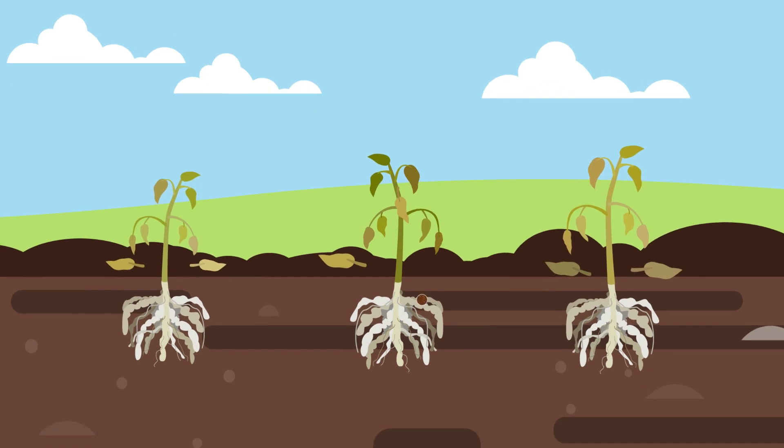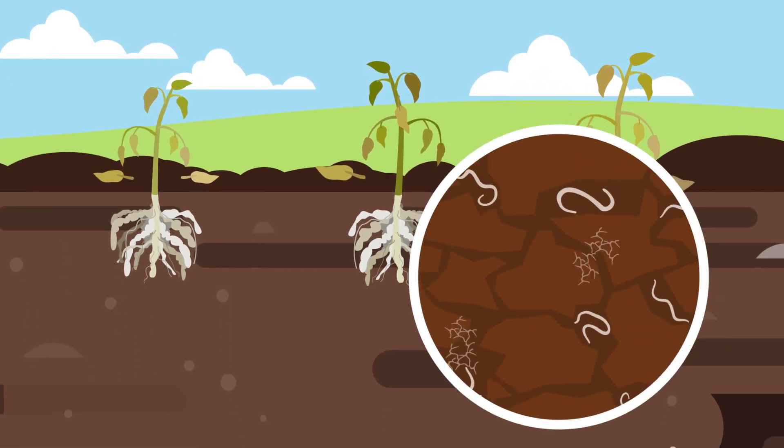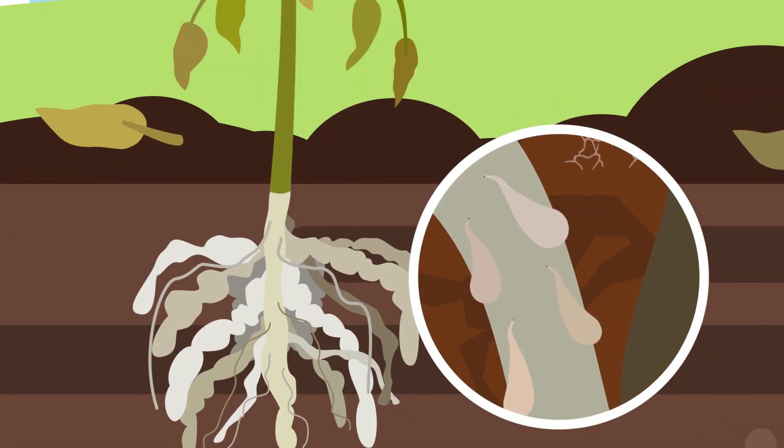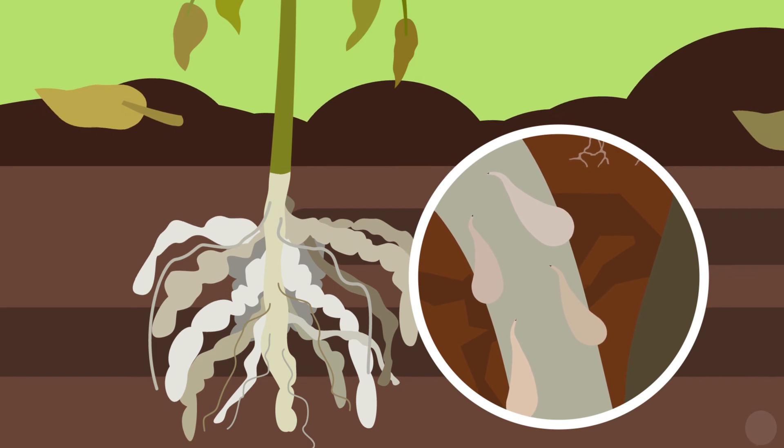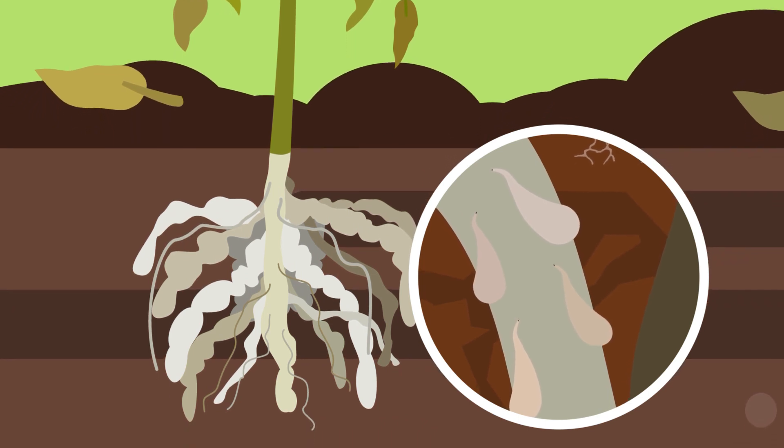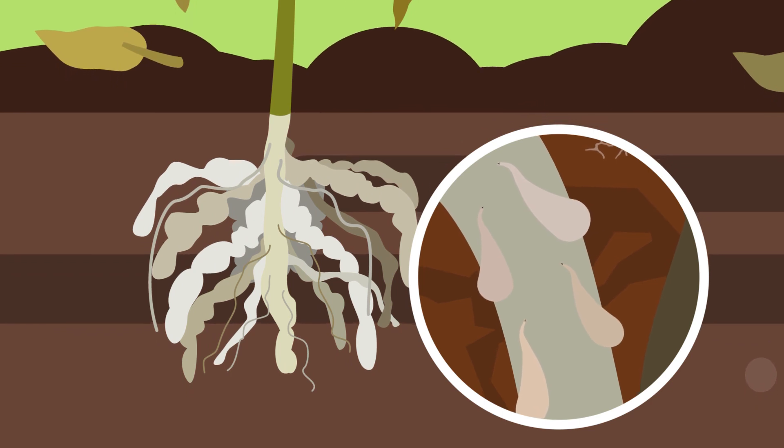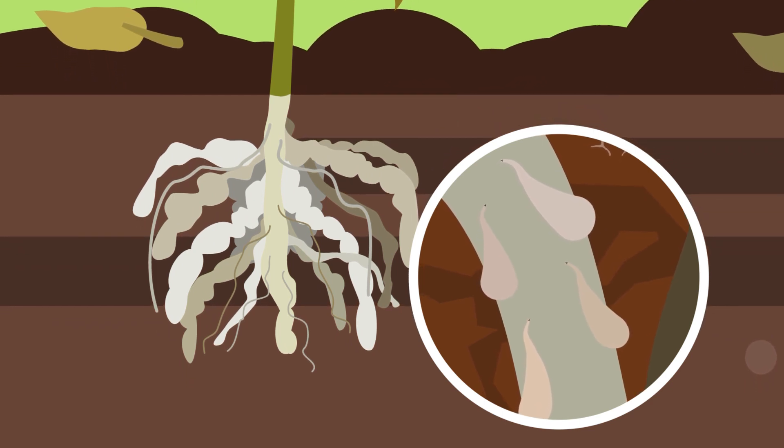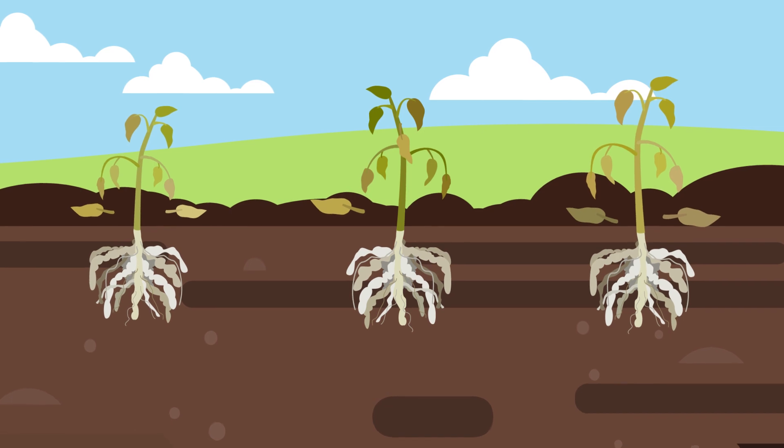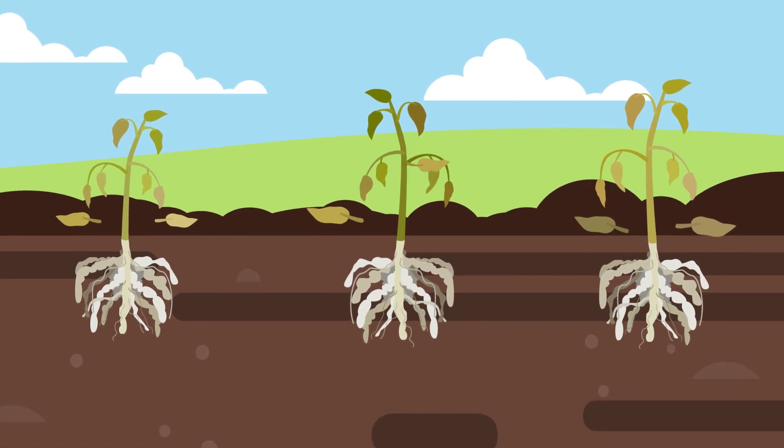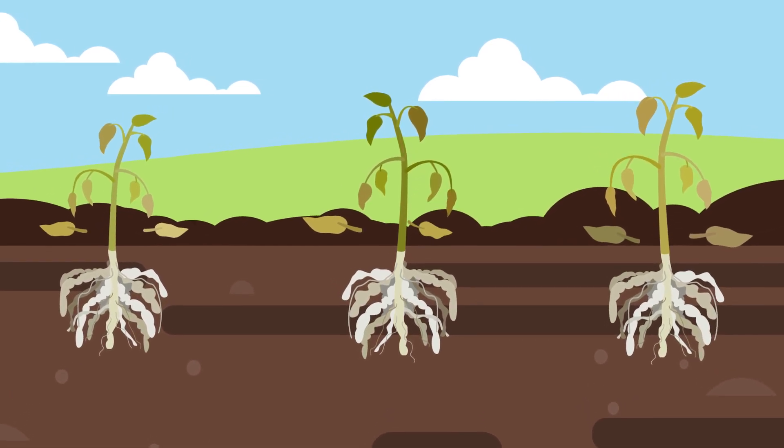While most soil nematodes are beneficial, a few nematode species such as root-knot nematodes can cause devastating crop damage. Efforts to control harmful plant-parasitic nematodes often lead to reduction of the beneficial species, an unintentional impact that may cause unwanted imbalances in the overall soil community.